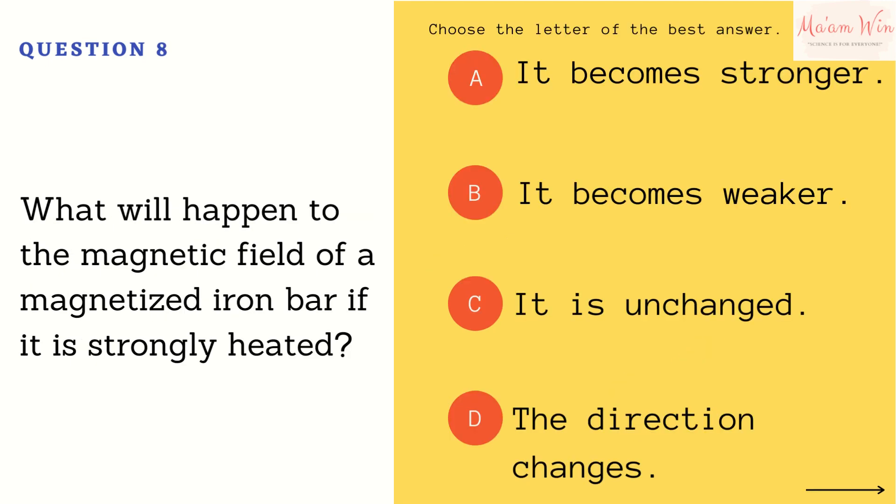Question number eight: what will happen to the magnetic field of a magnetized iron bar if it is strongly heated? Letter A, it becomes stronger. Letter B, it becomes weaker. Letter C, it is unchanged. Letter D, the direction changes. Choose the letter of the best answer.